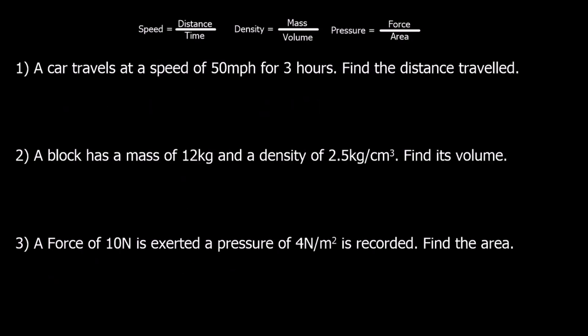In these examples, we're looking for different things in the formula. Speed equals distance over time, but we're working out distance in this example. We've got a speed of 50, so 50 equals distance over time, 3. I've substituted in speed as 50, time as 3.